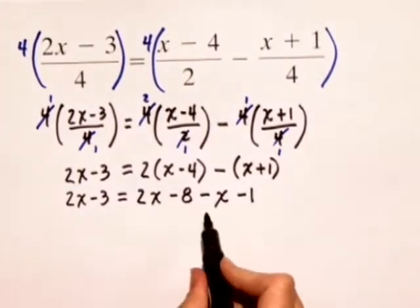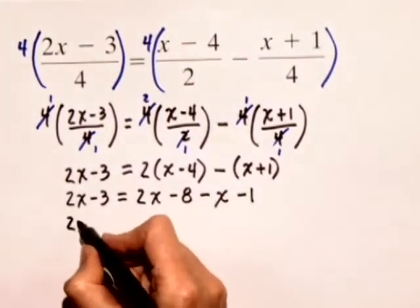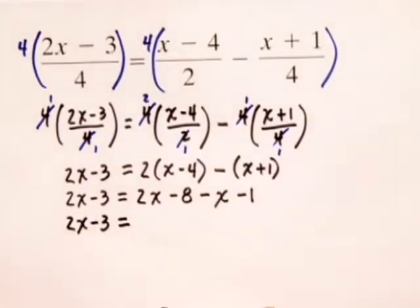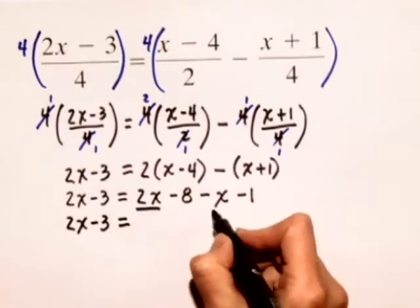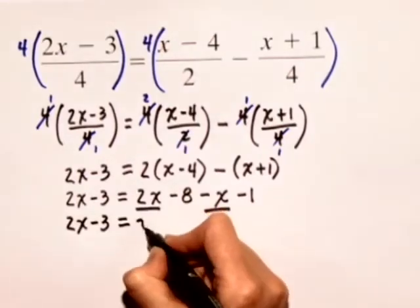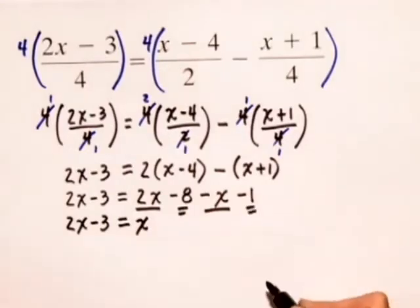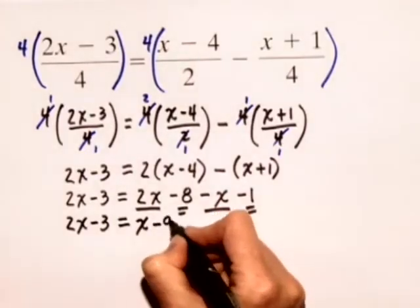So, on the right hand side, let's combine some like terms. We'll leave the left hand side alone, 2x minus 3 is equal to, on the right hand side we have 2x minus x, which just gives us x, and then we have negative 8 minus 1 gives us minus 9.